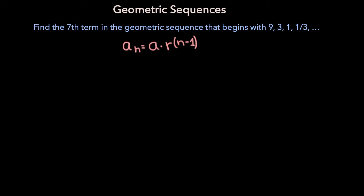Now let's put this formula to use with the following problem: find the seventh term in the geometric sequence that begins with 9, 3, 1, and 1 third. Since we're looking for the seventh term, n is equal to 7, and a is just the first term, so it's equal to 9. To find the common ratio r, we can take any term in the sequence and divide it by the previous term. So if we take the second term, 3, and divide it by the first term, 9, we get that the common ratio for this sequence is 1 third.